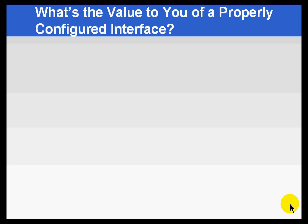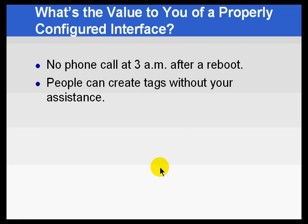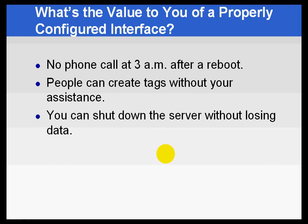So we've considered what a properly configured interface should do. What value would it be to you if it could do those things? Well, for one thing, you wouldn't get a phone call at 3 a.m. after the system accidentally reboots or loses power — auto-starting on reboot is a feature that's going to save you a lot of trouble. Also, people can create their own tags without your assistance. If there is an auto tag update, those privileged users won't need to bother you and ask you to stop and restart the interface. And you can shut down the server without losing data — that's a hugely important feature, and what we're talking about is that buffering capability.